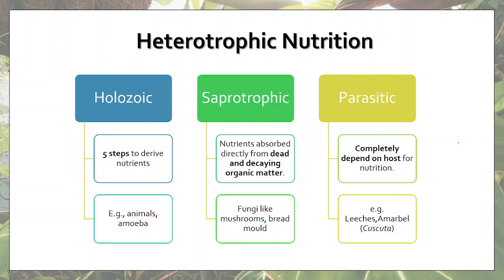Examples of parasites include leeches, ticks, mites, bed bugs, and even mosquitoes, because mosquitoes absorb blood which contains nutrients. There are also parasitic plants like amabel, which grows on trees — it does not show any autotrophic nutrition and deprives the trees it grows on from nutrients. Parasites are different from predators: predators kill their prey before feeding on them, whereas parasites do not kill their host organisms. They live inside a living host and derive nutrients from it.